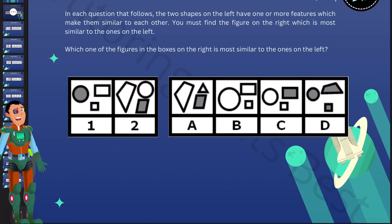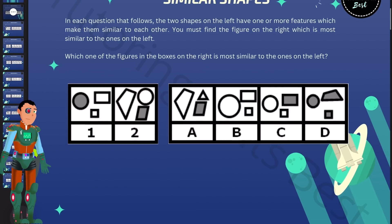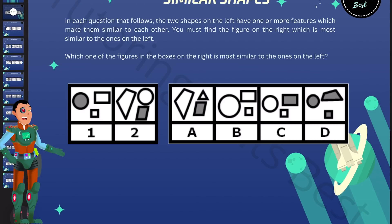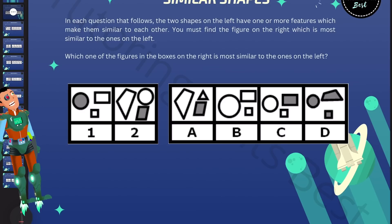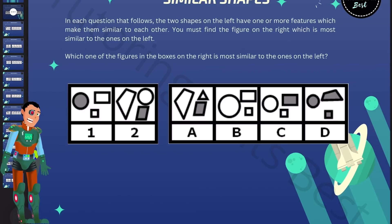In each question that follows, the two shapes on the left have one or more features which make them similar to each other. You must find the figure on the right which is most similar to the ones on the left.